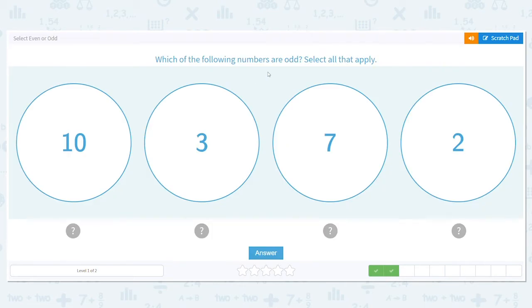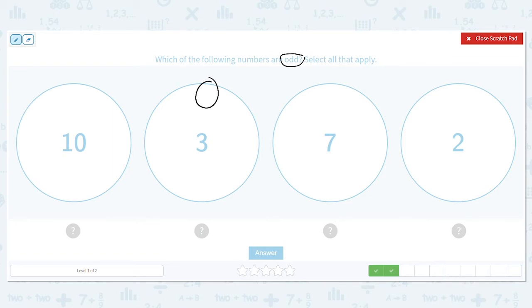Next, which of these are odd? I'm going to skip the 10 for now and come back to it. Look at the three. Is three even or odd? One, three, five, seven, nine. That's a three, so that's odd. How about the seven? Even or odd? Odd. Good. What about two? Two is even. Zero, two, four, six, eight. So this one is even.